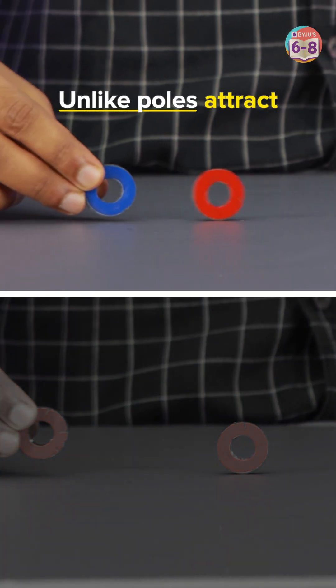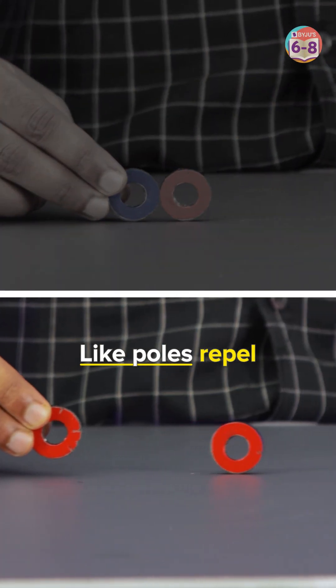But how does it work? Half of a ring magnet is the north pole and the other half is the south pole. Unlike poles attract each other, but when we bring the like poles together, they repel.